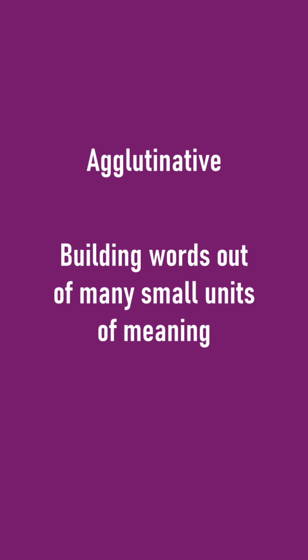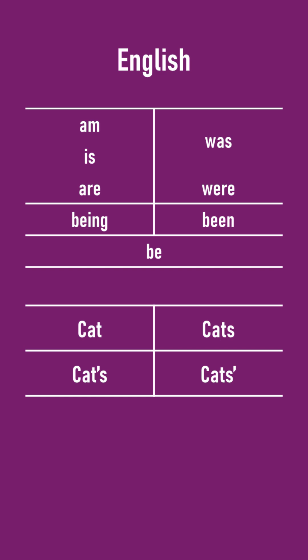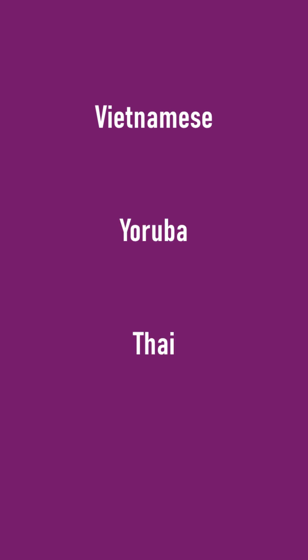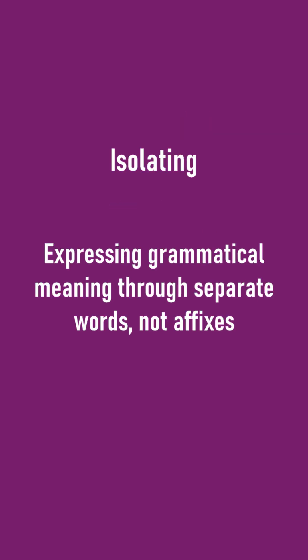But what about on the other end of the spectrum? We've seen that English doesn't allow many elements to be added to its words, but it does still allow some. There are actually also languages, such as Vietnamese, Yoruba, and Thai, which allow next to no elements to be added on to any of their words. Each word is just the word alone, and grammar has to be shown using more individual words. These are what we call isolating languages.